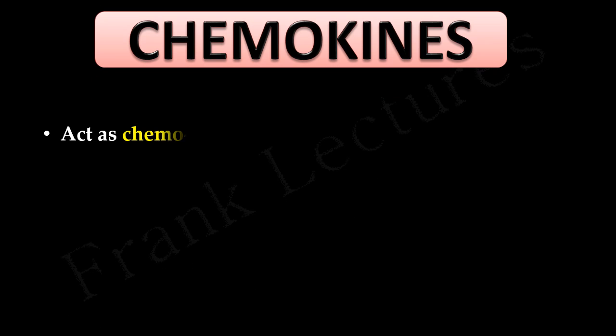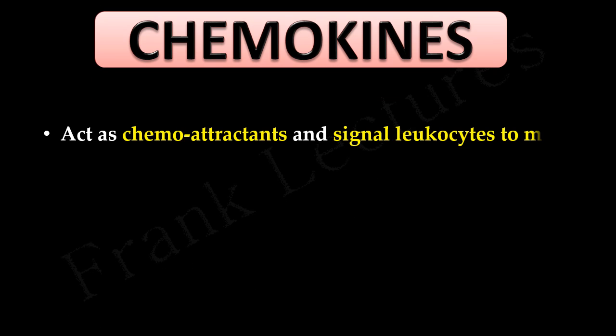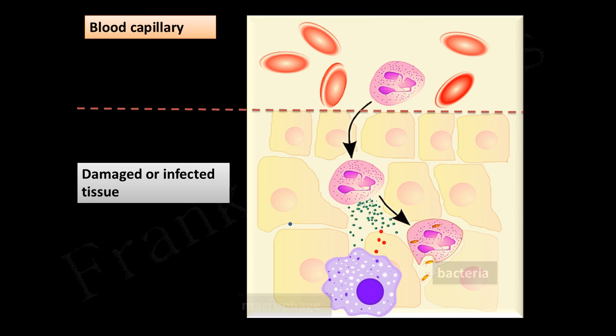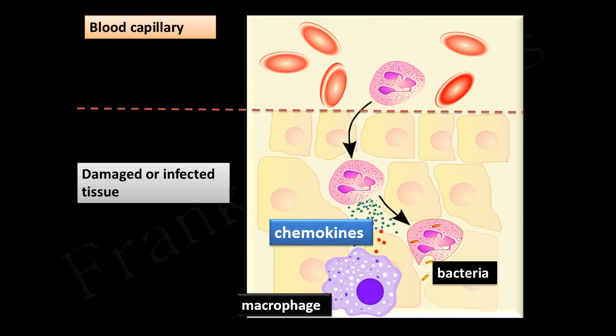Chemokines act as chemoattractants and signal leukocytes to move, thereby controlling leukocyte migration. For example, when there is an infection, chemokines secreted at the site of infection signal leukocytes such as neutrophils in the blood to migrate to the site of infection, where neutrophils become the principal phagocytic cells.